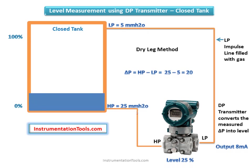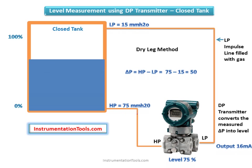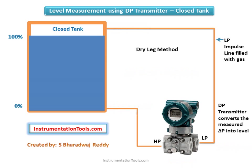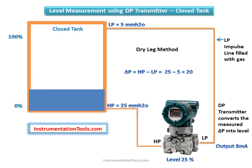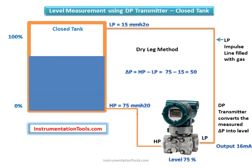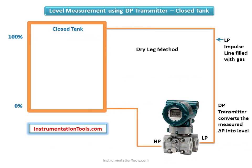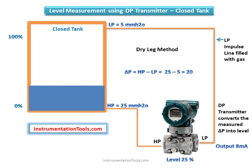This type of pressure connection is known as a dry leg. The differential pressure measured by the DP transmitter is used to determine tank level. A dry leg enables the transmitter to compensate for the pressure pushing down on the liquid's surface. It is recommended to maintain a dry reference leg, since condensate buildup can introduce errors in level measurement.